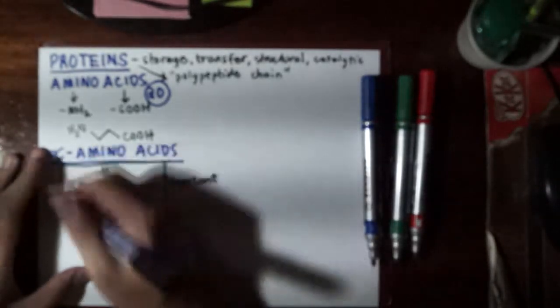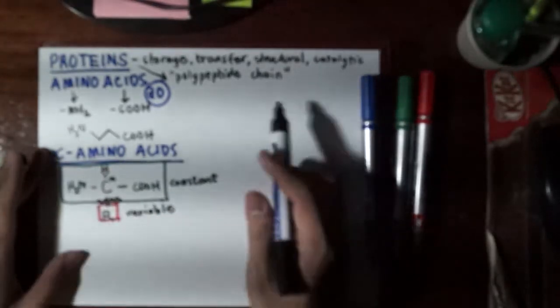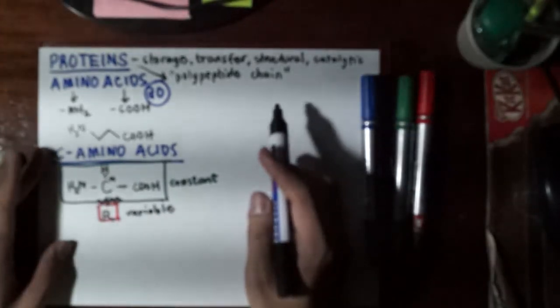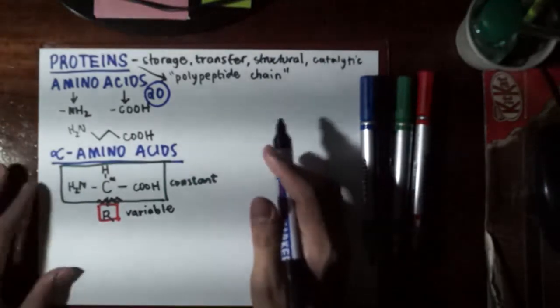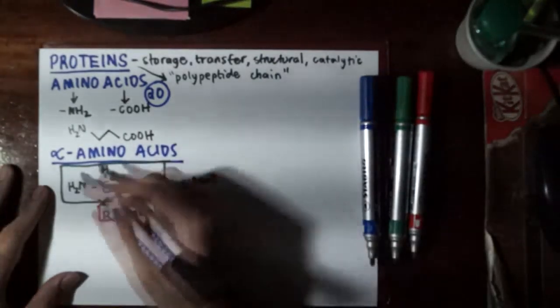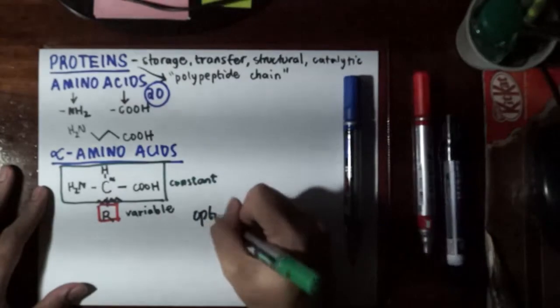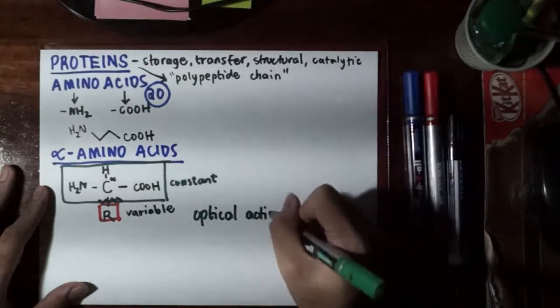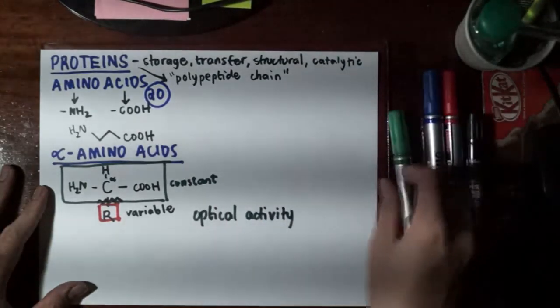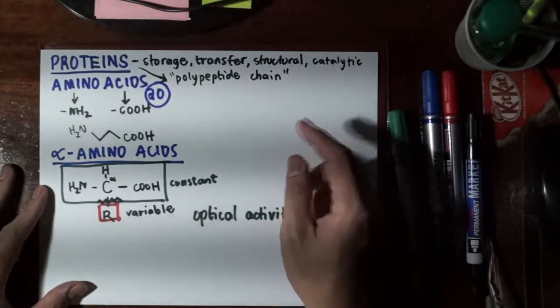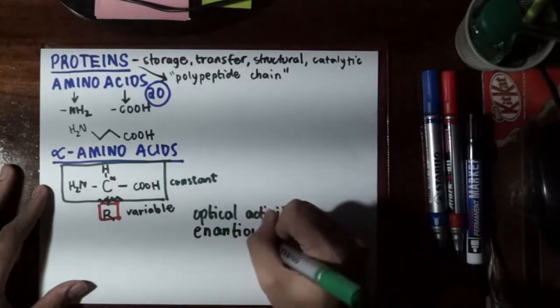Another thing I would like to mention is that if you look at the alpha carbon, it is attached to four different substituents. If you have a carbon bonded to four different substituents, in organic chemistry there's a property that is imposed on this carbon, and this property is known as optical activity. Optical activity is the ability to rotate a plane of polarized light. We get enantiomers or mirror images of this one.